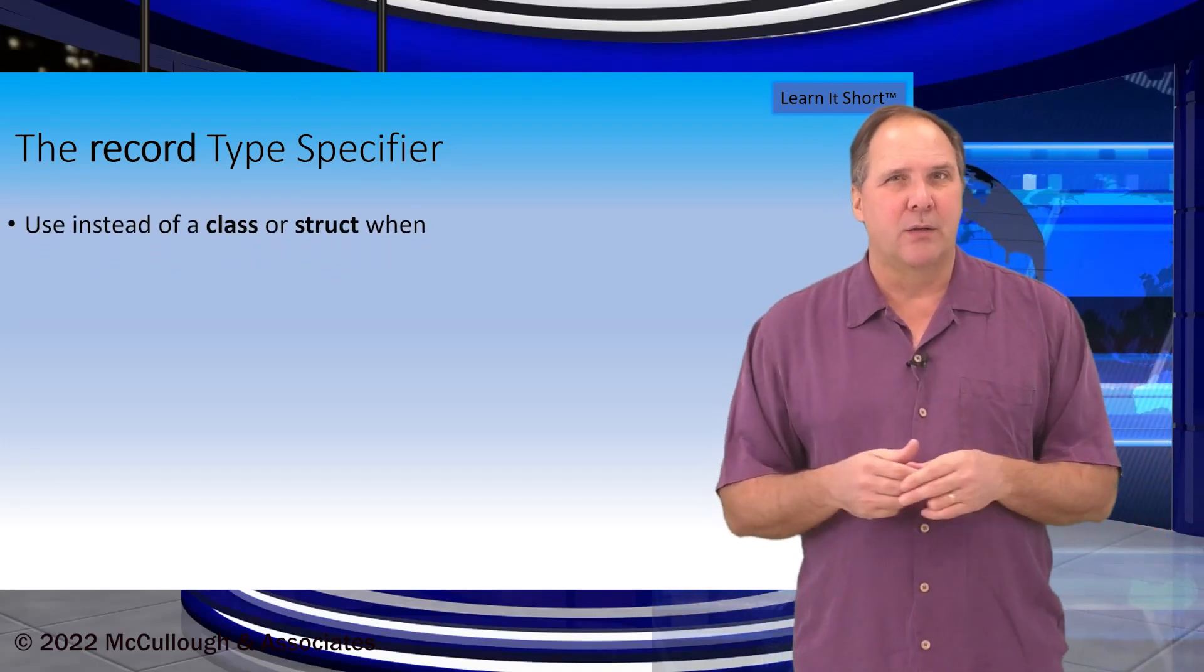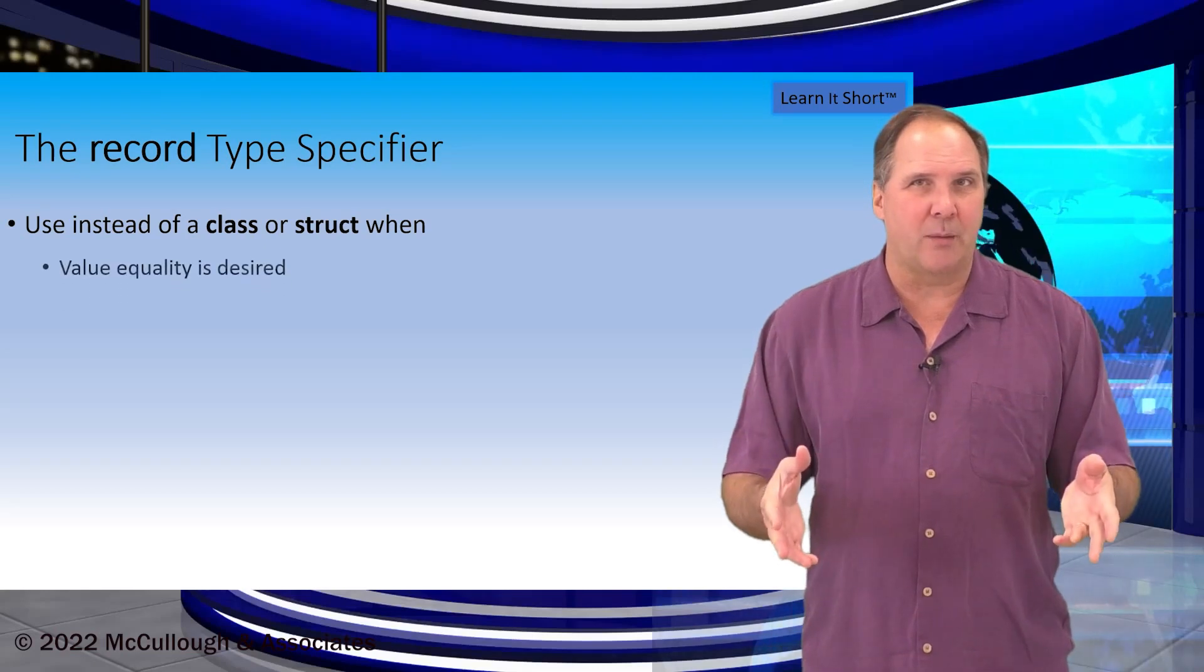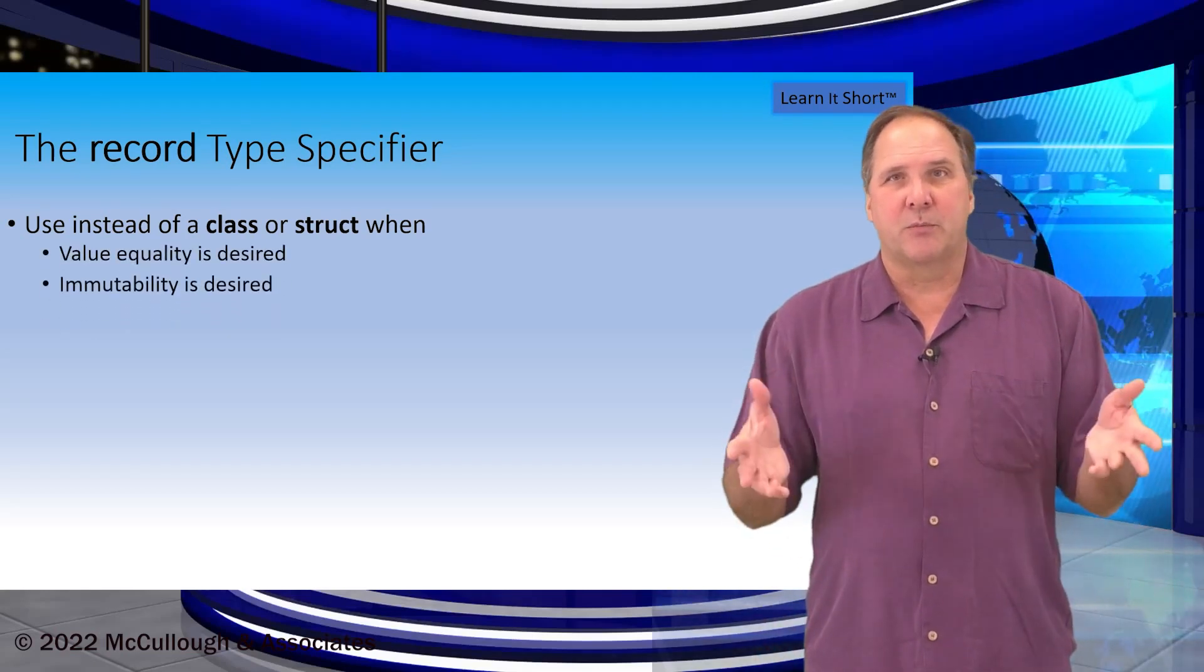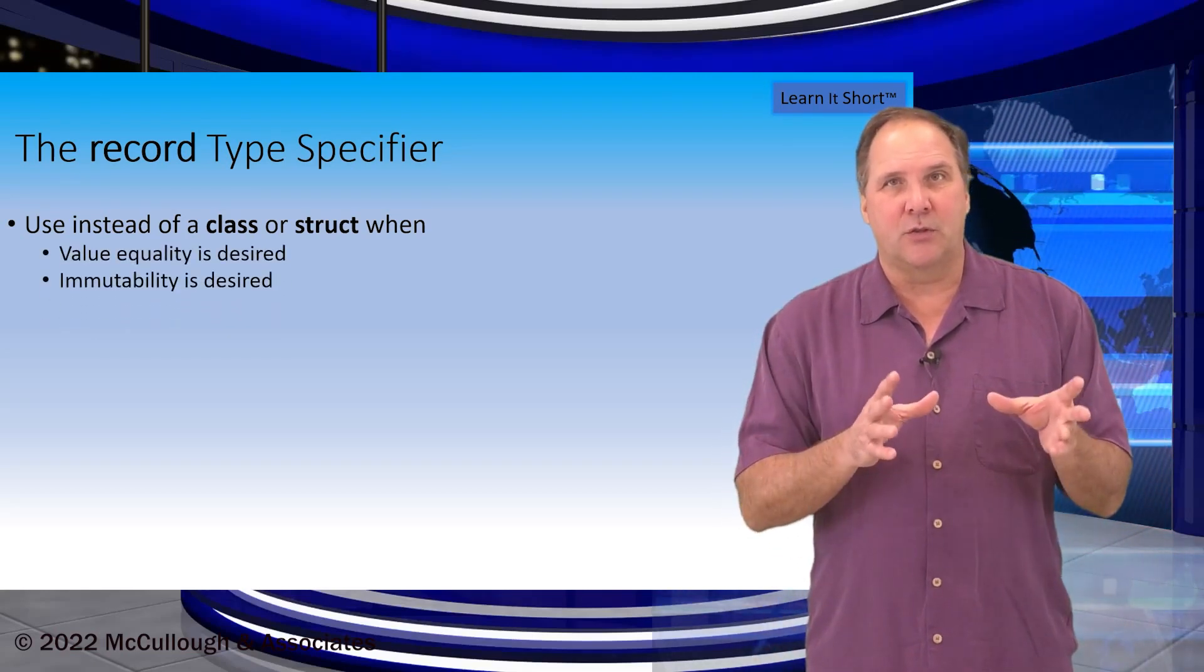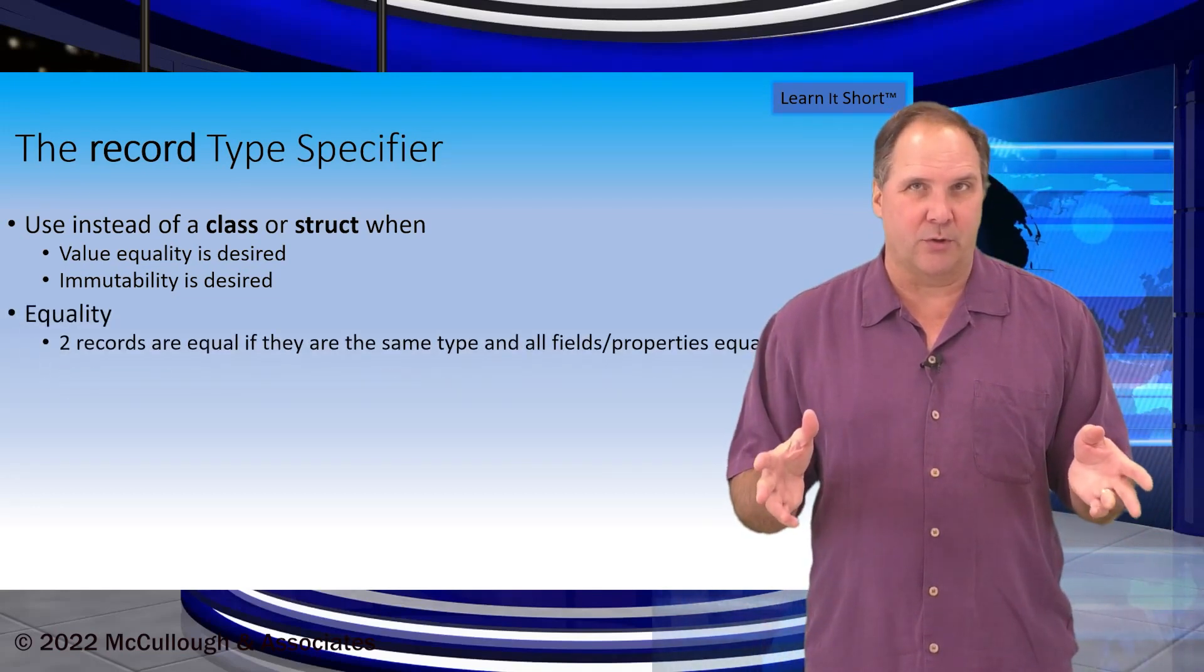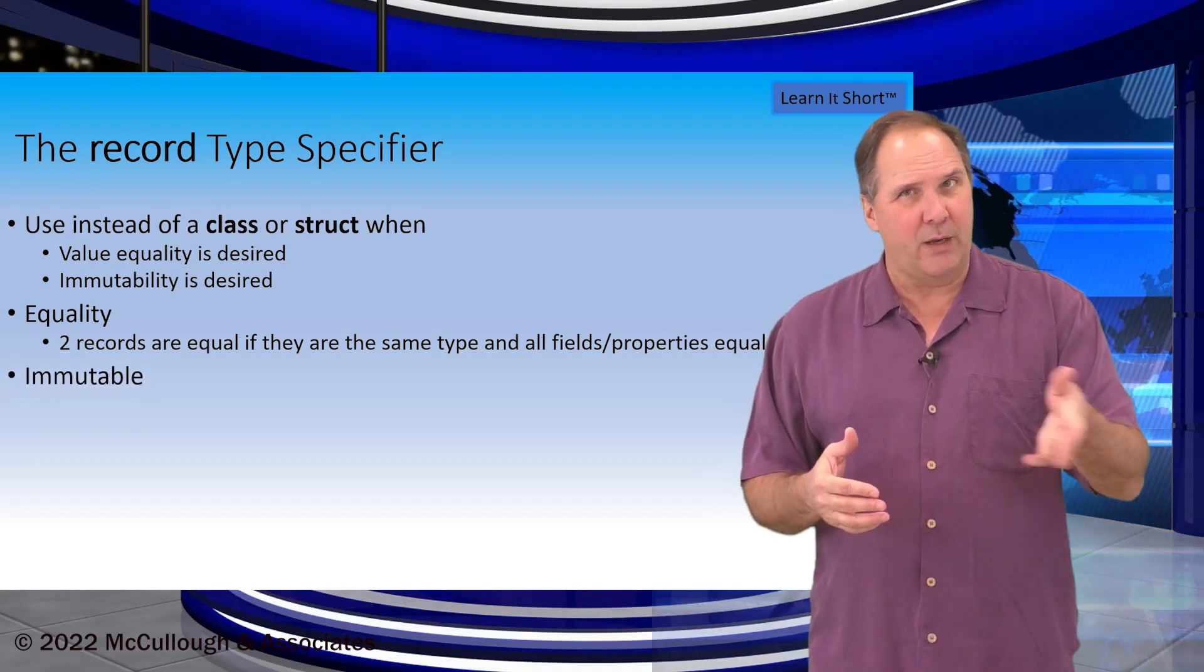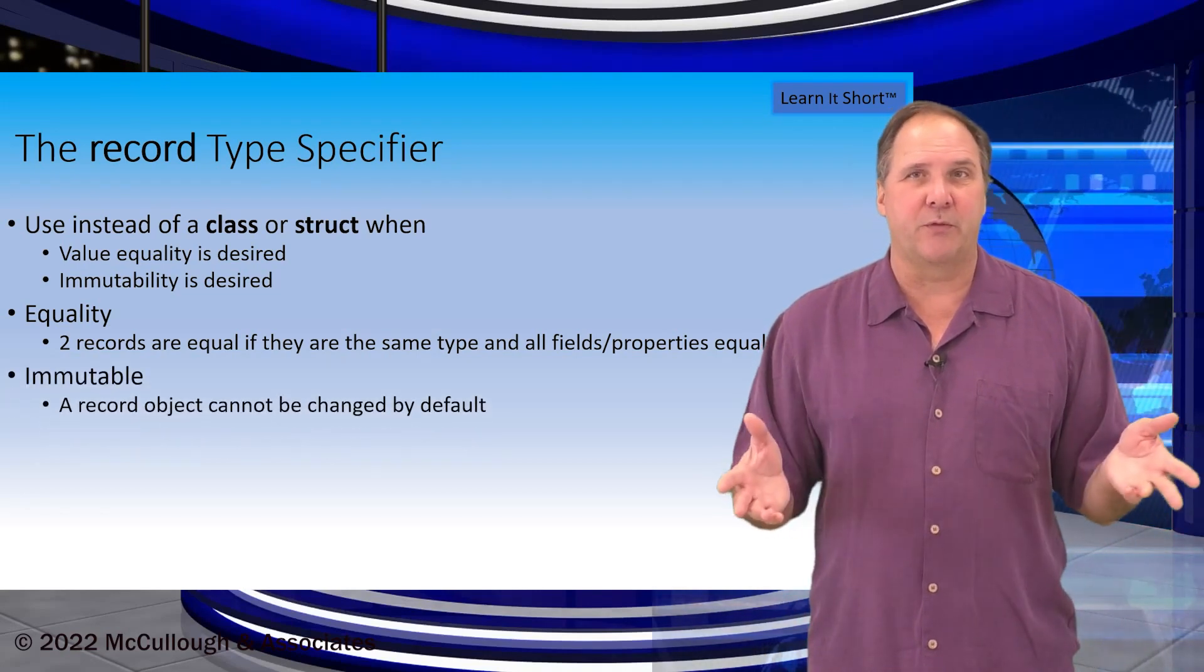Now use a record when you need value equality, immutable objects, and in terms of equality meaning that the two records have to be the same type and all of their values are also equal. Records are also immutable by default but you can make records mutable or changeable if you wish.